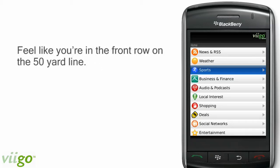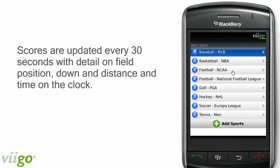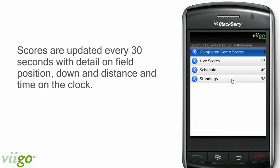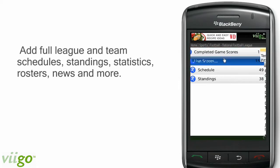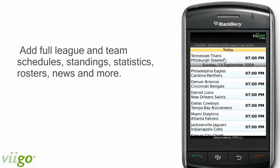Vigo's NFL Service makes you feel like you're in the front row on the 50-yard line. Scores are updated every 30 seconds with details on field position, down and distance, and time on the clock. Add full league and team schedules, standings, statistics, rosters, news, and more, and the NFL Service provides you with the information you'll need from the first kickoff of the season to the crowning of the Super Bowl champion.